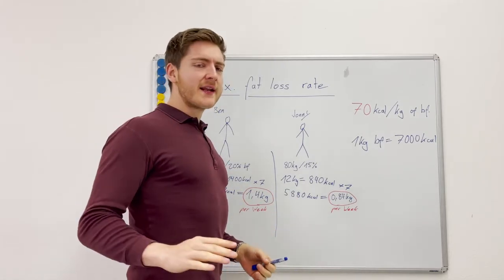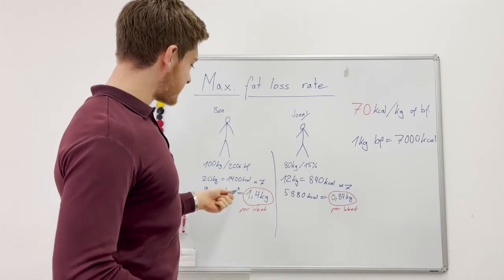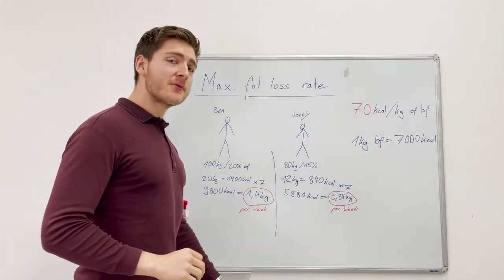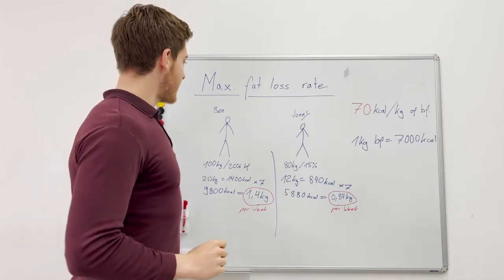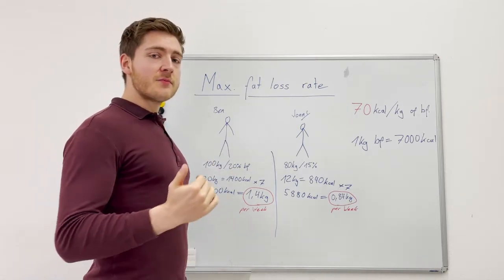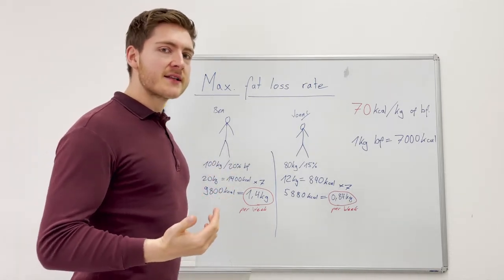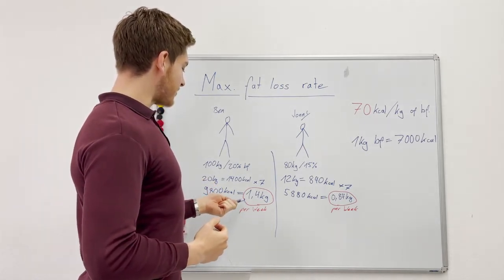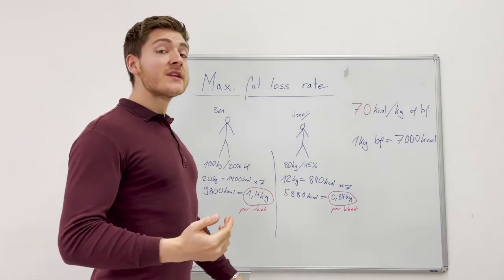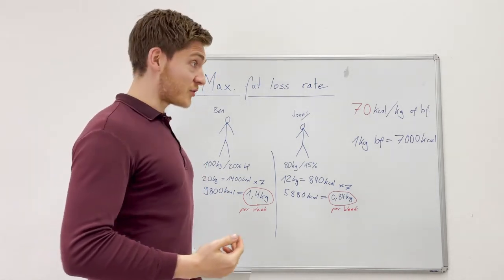If you go pedal to the metal really grinding it all out, a deficit of like 1400 per day is really, really tough. Let's say for example Ben's calorie intake to maintain his weight is around 3000 calories. In order then to get to that deficit he can only eat 1600 calories, which is not that much. It's really hard.